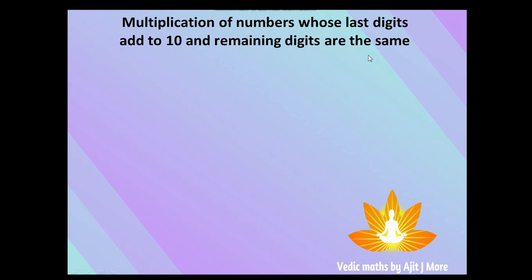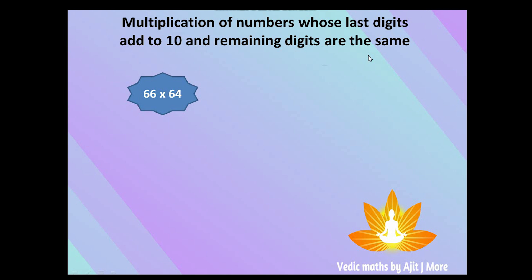Let's see some examples. Take 66 × 64 — the addition of unit place digits is 6 + 4 = 10, and the remaining digits in both multiplicand and multiplier are the same. One more example: 107 × 103 — the addition of unit place digits is 7 + 3 = 10, and the remaining digits in both numbers are the same.